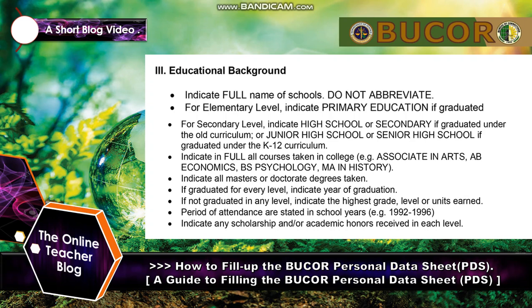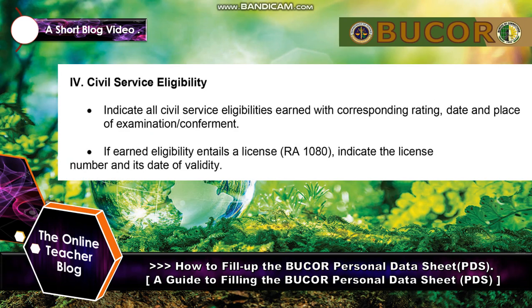Indicate all Master's or Doctorate degrees taken. If graduated for every level, indicate the year of graduation. If not graduated at any level, indicate the highest level and units earned. Period of attendance should be stated in school years — for example: 1992 to 1996. Indicate any scholarship and/or academic honors received at each level.